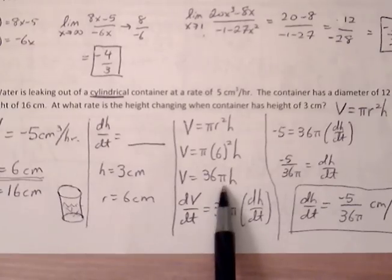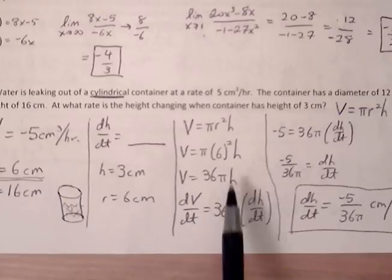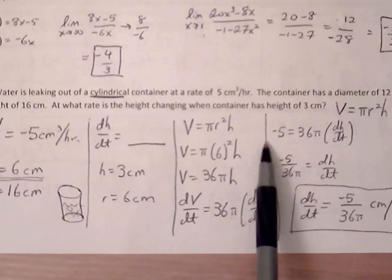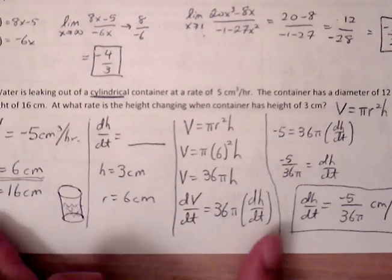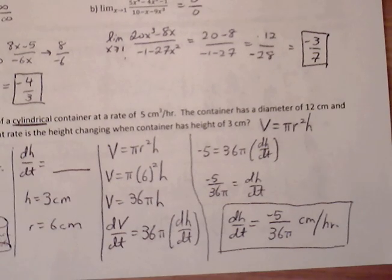So V becomes dV/dt, 36π is the coefficient that stays, h becomes dh/dt. So now we have dV/dt which is negative 5, we're looking for dh/dt, so we just divide the 36π over and we get dh/dt is negative 5 over 36π centimeters per hour.